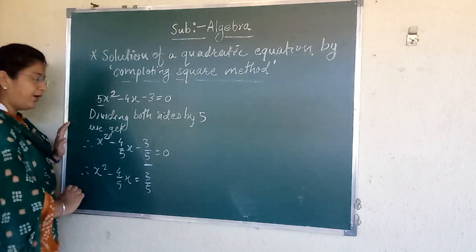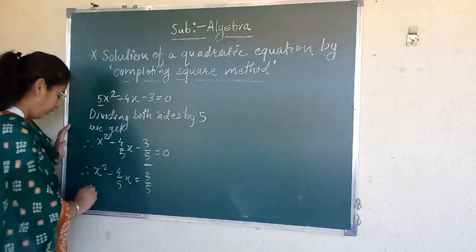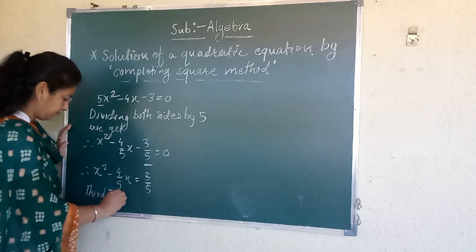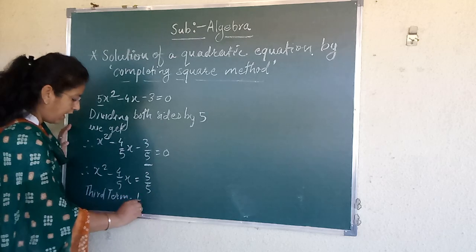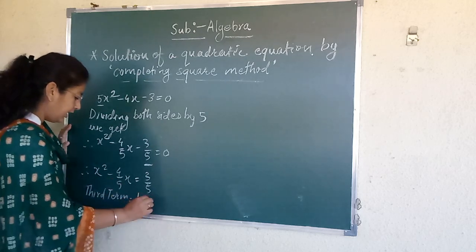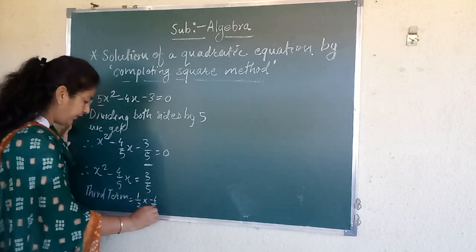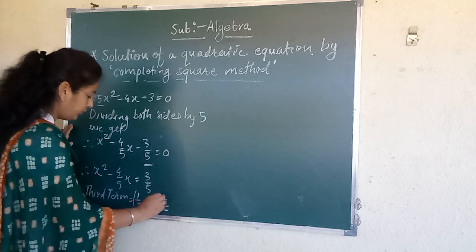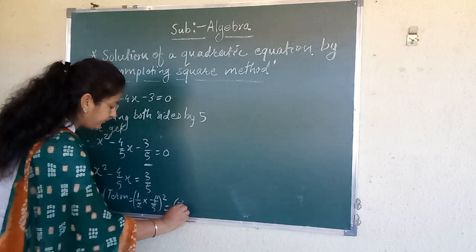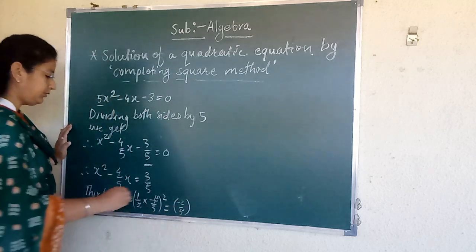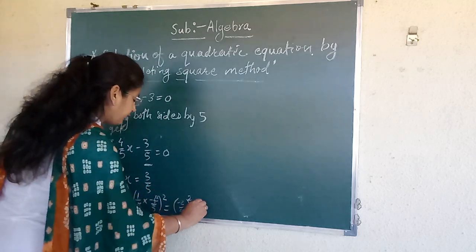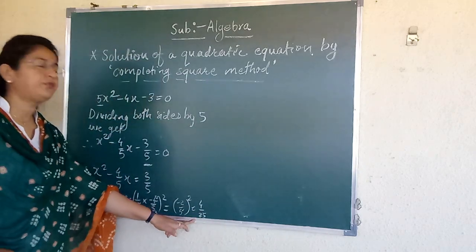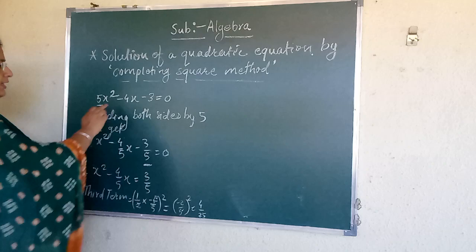Now we have to find a third term by the formula. Third term is equal to 1/2 coefficient of x, that is -4/5, bracket square. So 2 ones are 2, 2 negative 2/5 bracket square, that is 4/25. So this we have to add both the sides.